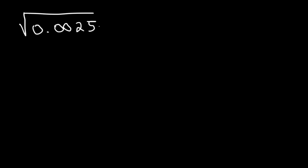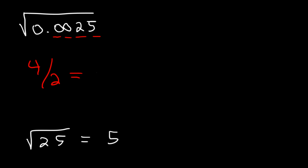Let's try 0.0025. We know that the square root of 25 is 5, and there are a total of 4 digits to the right. So 4 divided by 2 is 2. So when you multiply decimals you add the digits, when you're dividing you subtract the digits, and when you're taking the square root you divide the digits. The final answer should have 2 digits to the right of the decimal point, so this answer is 0.05.